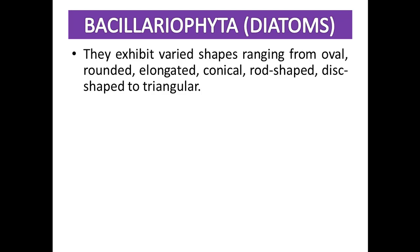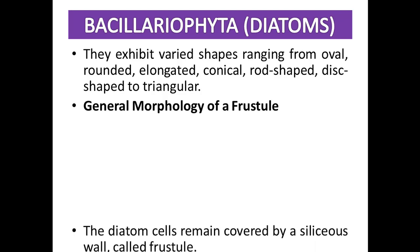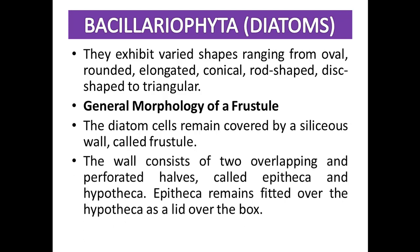Regarding the general morphology of a frustule: the diatom cells remain covered by a siliceous wall called the frustule. The wall consists of two overlapping and perforated halves.